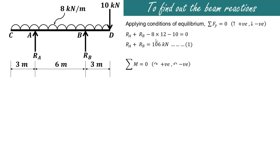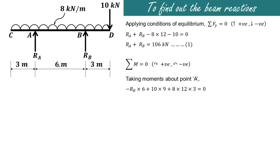The second condition of equilibrium is summation of moments equals zero. Clockwise moments are considered positive and anti-clockwise moments negative. Taking moments about point A: Rb will produce an anti-clockwise moment about A. The perpendicular distance between B and A is 6, so minus Rb into 6. The 10 kilonewton load produces a clockwise moment, so positive 10 into the perpendicular distance of 3 plus 6, which is 9.